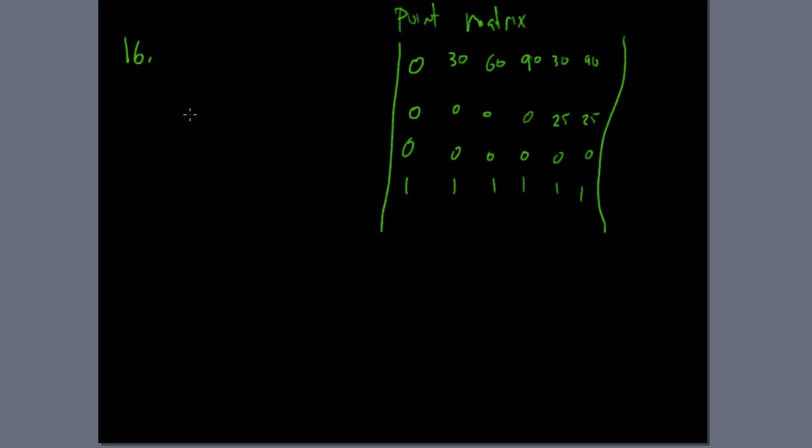So that describes the point matrix. And then the translation matrix looks something like this. I'll put the translation here. You remember, one, zero, zero, blank. Zero, one, zero, blank. Zero, zero, one, blank. And zero, zero, zero, one.